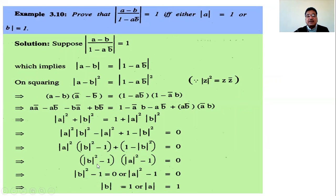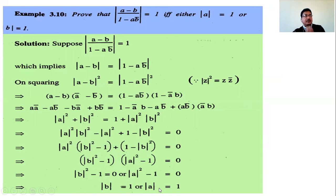Factoring: (|a|² - 1)(1 - |b|²) = 0, or equivalently (|a|² - 1)(|b|² - 1) = 0. Therefore either |a|² - 1 = 0 giving |a| = 1, or |b|² - 1 = 0 giving |b| = 1.